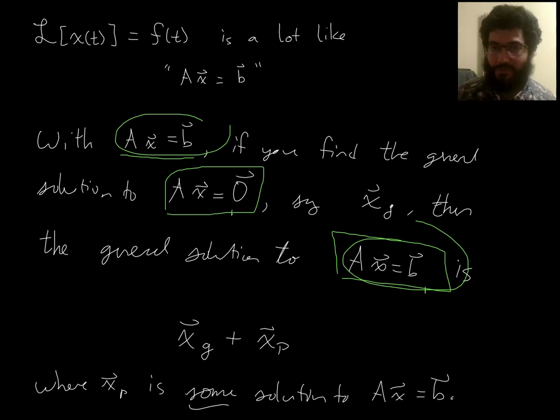So that's a pretty good deal, right? That reduces our problem of trying to find a general solution to this, to just find one solution. Then add it to your general solution to the homogeneous linear system that you already know how to find.